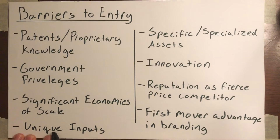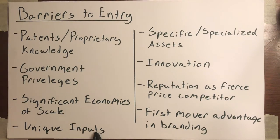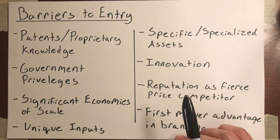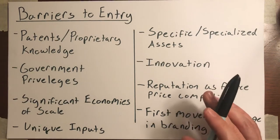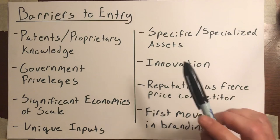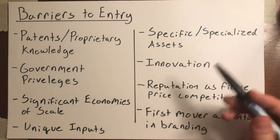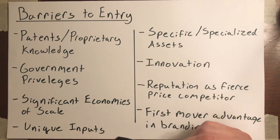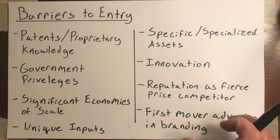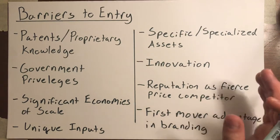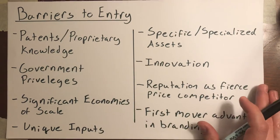Another barrier to entry is a unique input. In the case of Tommy Suharto, cloves are a unique input — they only grow in certain areas of the world. At the time Suharto was president, Indonesia was essentially the only place they were grown. There's no way to make an exact substitute for clove cigarettes without that input. If you can monopolize that input, or if you're the only one who has it, you'll be the only one who can produce that good.